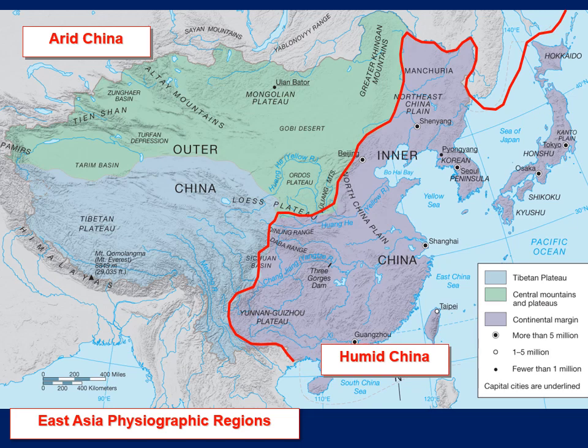There are two main physiographic regions in East Asia. One is called humid China or inner China, and the other is outer China or arid China. When you do your map reading activity on Canvas this week, you'll look at population distribution throughout this region — arid China is rather sparsely populated because of the temperature extremes found there.